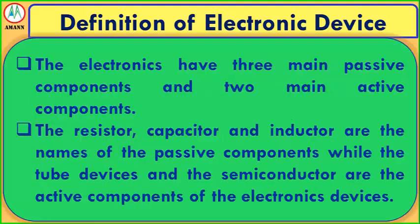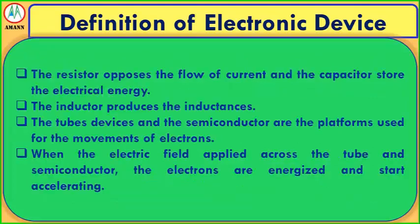Electronics has three main passive components and two main active components. The resistor, capacitor, and inductor are the passive components. Tube devices and semiconductors are the active components. The resistor opposes the flow of current, the capacitor stores electrical energy, and the inductor produces inductance. Tubes and semiconductors are platforms used for the movement of electrons.